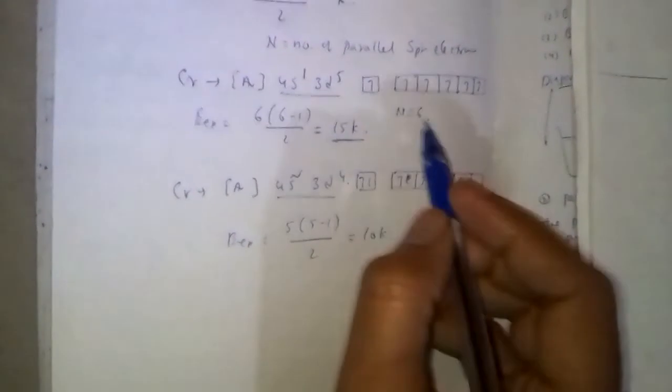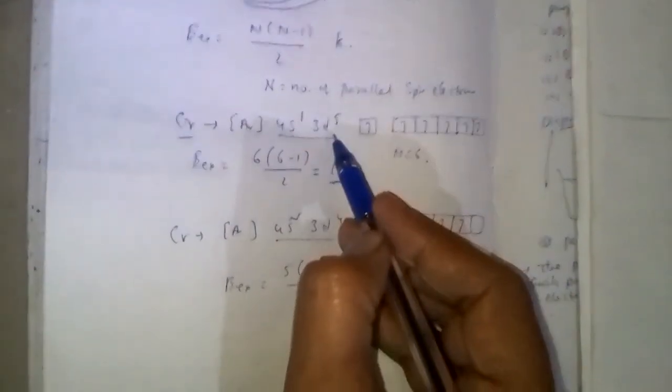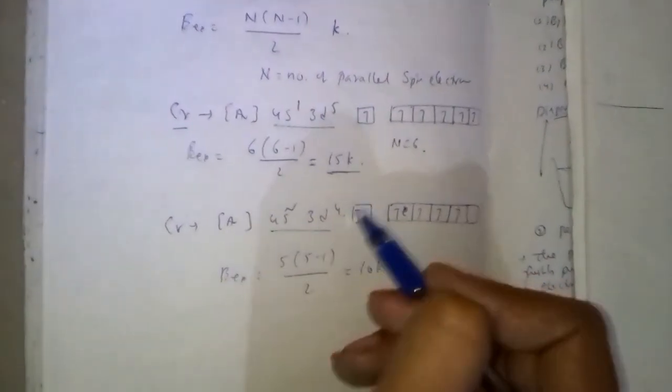Because it has higher exchange energy, chromium configuration is argon 4s1 3d5, but not 4s2 3d4.